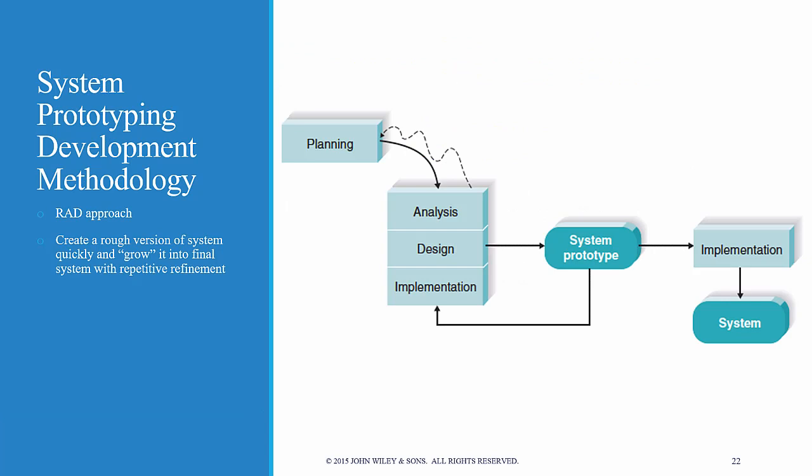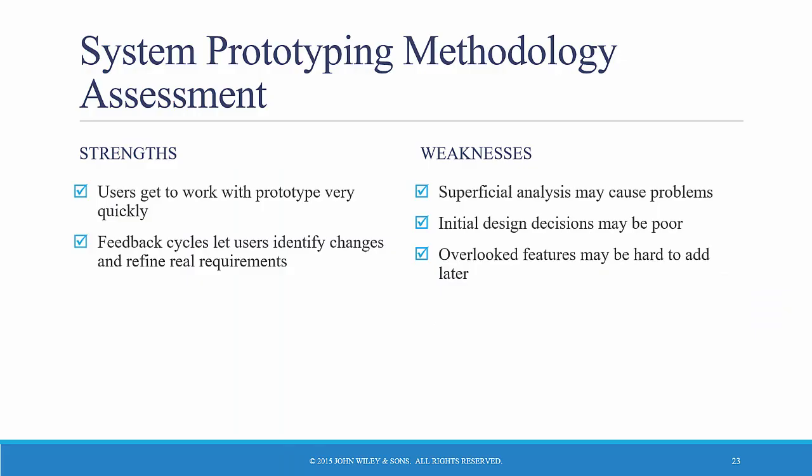RAD prototyping is similar to iterative development — you keep recycling through analysis, design, and implementation to get to a prototype, again and again, until the prototype becomes stable. Then you have a final implementation phase and develop the system. One of the advantages of prototyping is you don't have to know all the requirements up front. You develop a prototype that meets some requirements, and when you have that prototype you determine the additional requirements and go through the cycle again. Users have something to work with very quickly, and the feedback cycles enable users to say, 'I forgot that requirement — we need to put that one in,' and you address it the next cycle.